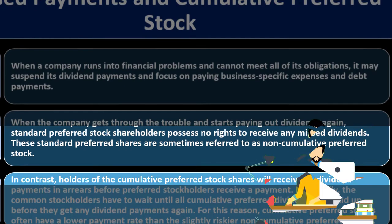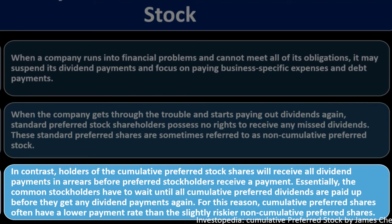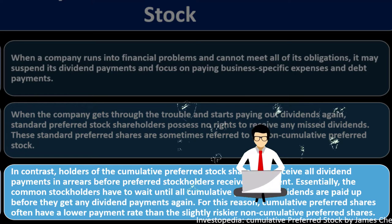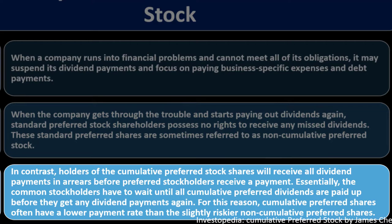In contrast, holders of cumulative preferred stock shares will receive all dividend payments in arrears before preferred stockholders receive any payments. If that stipulation is in place, the company must pay back the missed dividends before paying common stockholders. Common stockholders — who vote for the board of directors — have to wait until cumulative preferred dividends are paid up. For this reason, cumulative preferred shares often have a lower payment rate than the slightly riskier non-cumulative preferred shares.